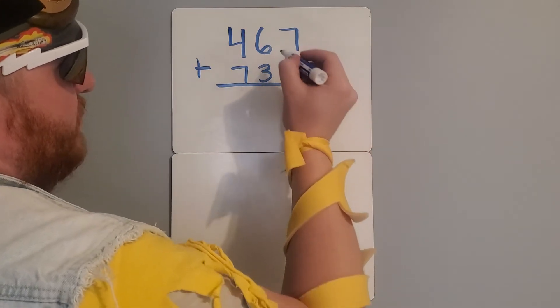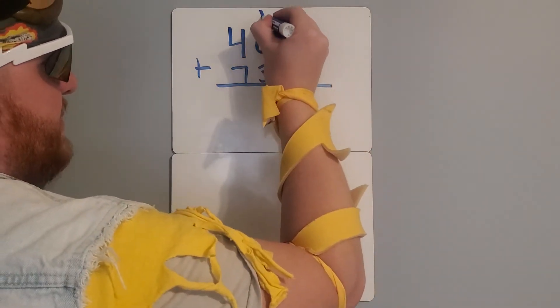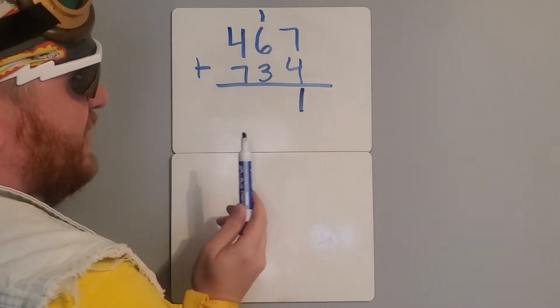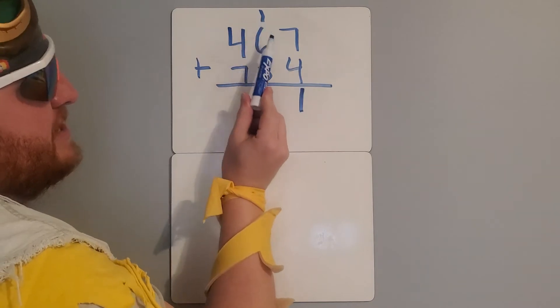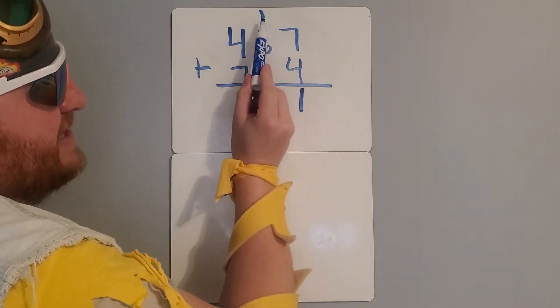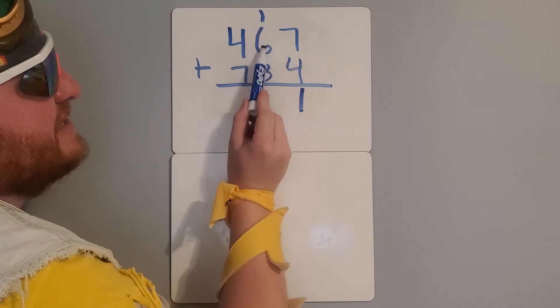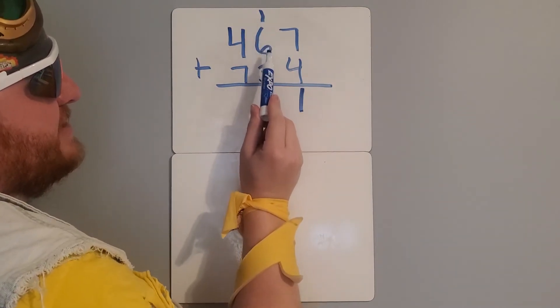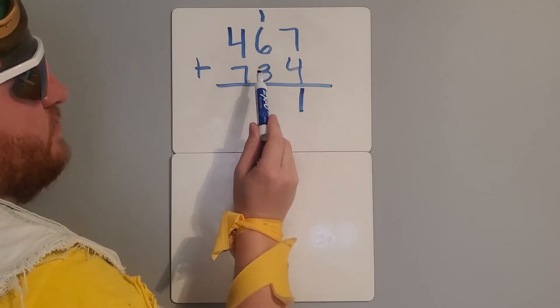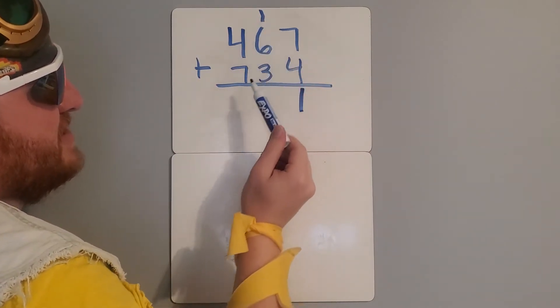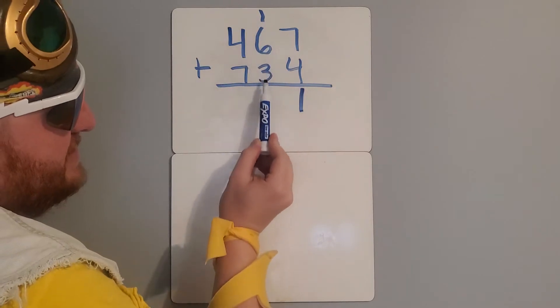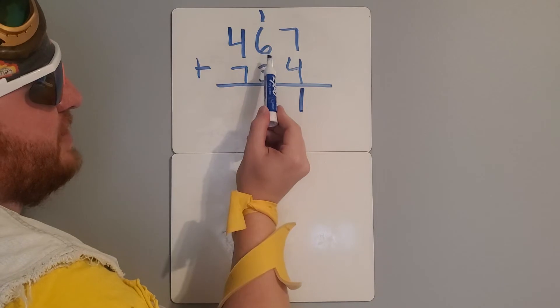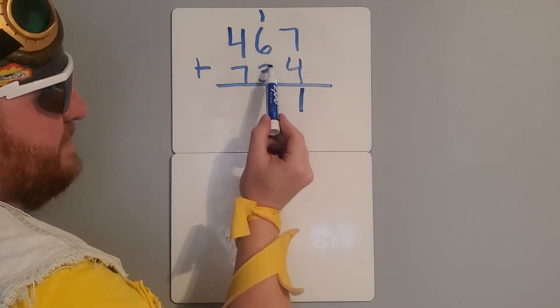Now, since the other part of my 11, the other one is in the tens place, I have to put this up here above the tens place. So I'm carrying that 10 up here. Sometimes you might hear people say you're carrying a 1, but really technically that 1, since it's in the tens place, stands for a 10. So now I'm adding 1 plus 6 plus 3, which technically means I'm adding 10 plus 60 plus 30, because all these are in the tens place. 1 plus 6 is 7, and 7 and 3 are what I call number buddies because they make 10.